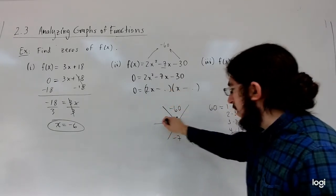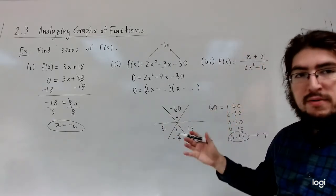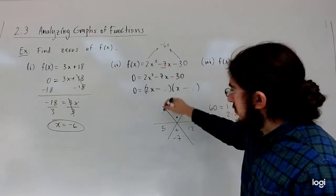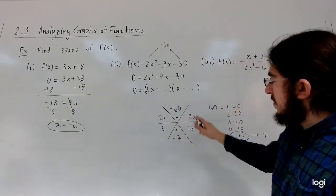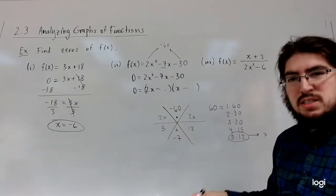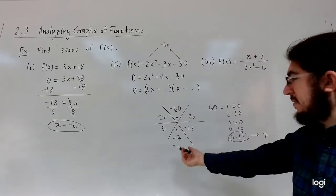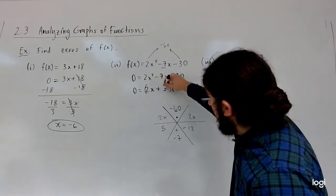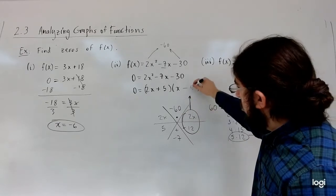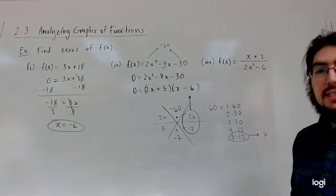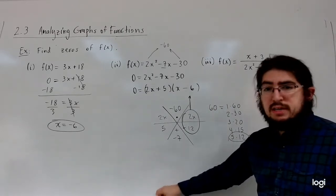We draw a line through this — so 5 and 12 — and the number in front of the first term without the square is 2x, so we get 2x over 5 and 2x over 12. We need to get the signs correct: it has to be negative 12 in order for them to combine to negative 7. That gives us 2x plus 5, and after reducing we get x minus 6. You can check that this foils out correctly.